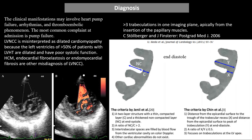The presentation of non-compact cardiomyopathy usually falls into three categories: heart failure, which is most often systolic; arrhythmia, especially malignant arrhythmia including atrial fibrillation and ventricular tachycardia, which in some cases can cause sudden cardiac death; and thromboembolism events from formation of blood clots between the trabeculations.